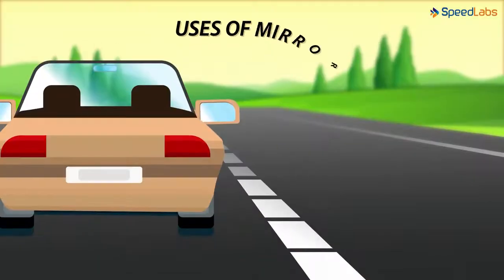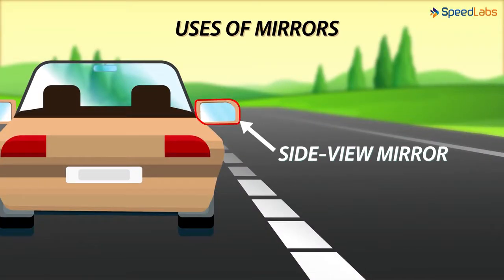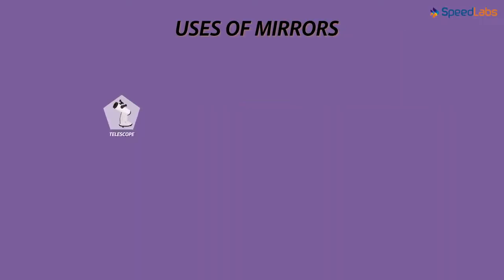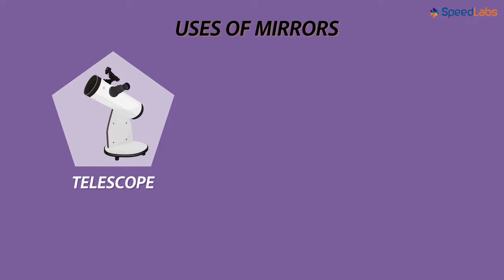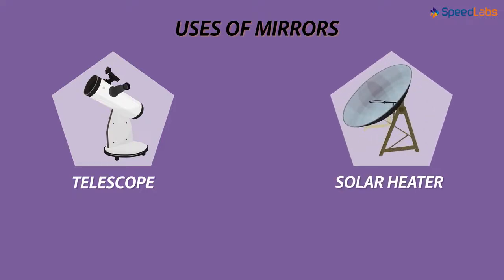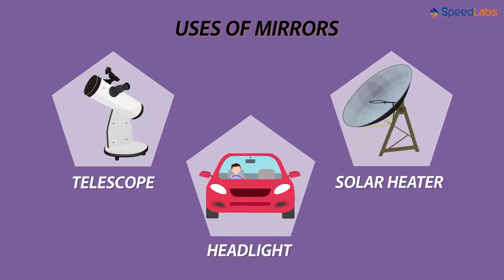Mirrors are also present on the sides of vehicles. The images of the vehicles behind us are formed in it, helping us to keep track of the vehicles mostly behind us. Mirrors are also used in some types of telescopes, solar heaters, and headlights of vehicles.